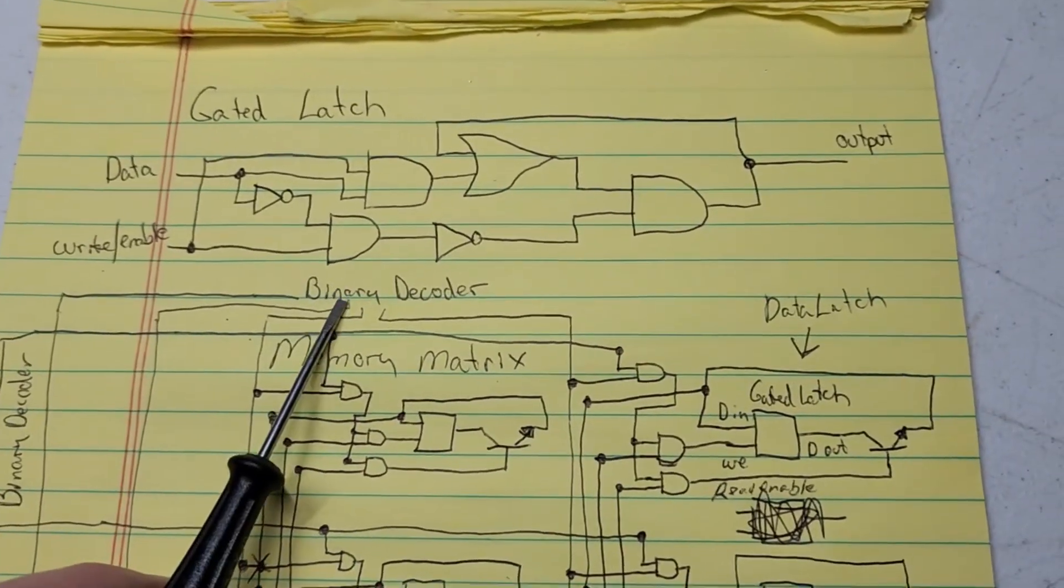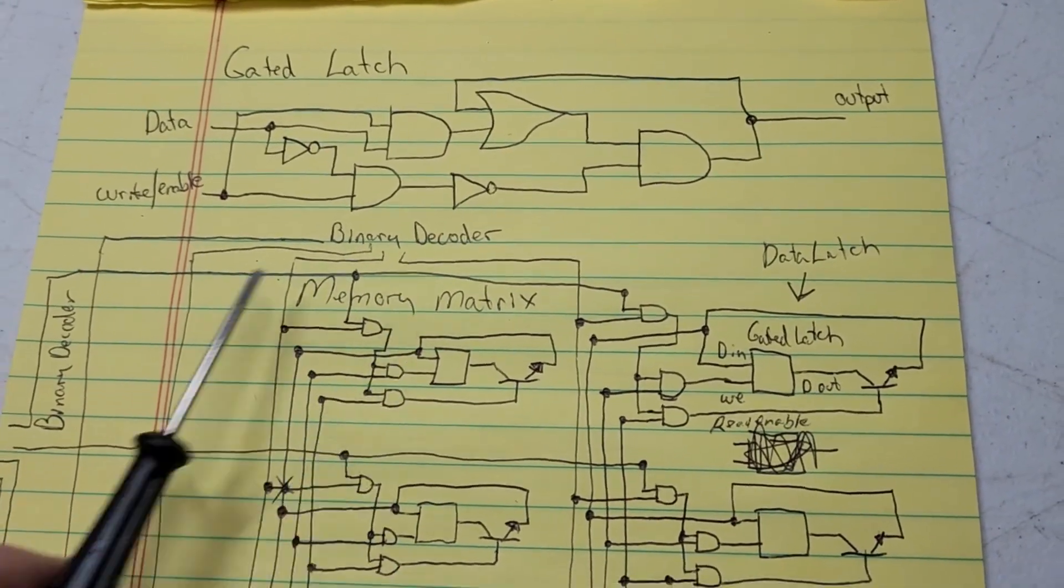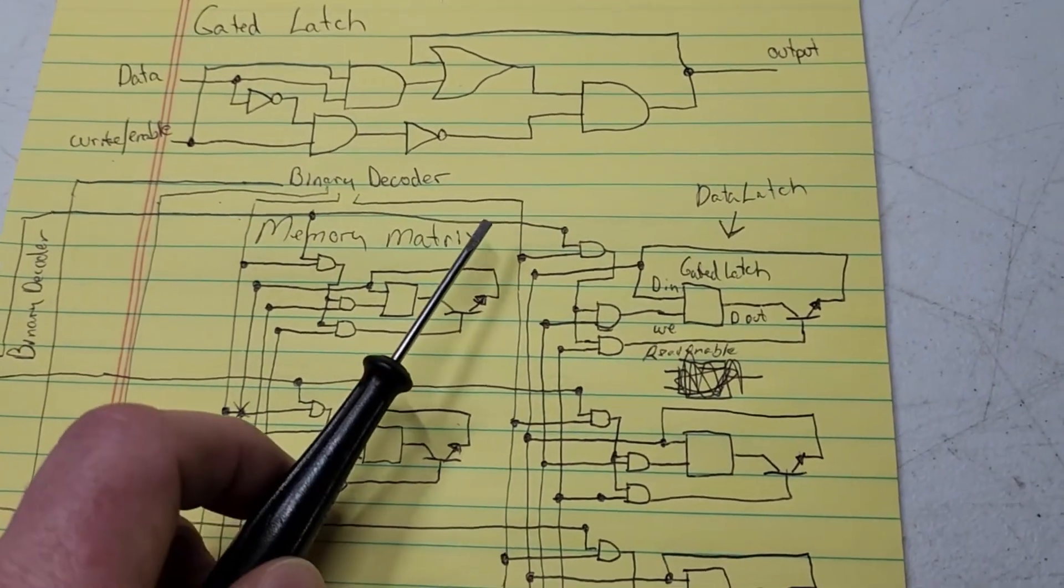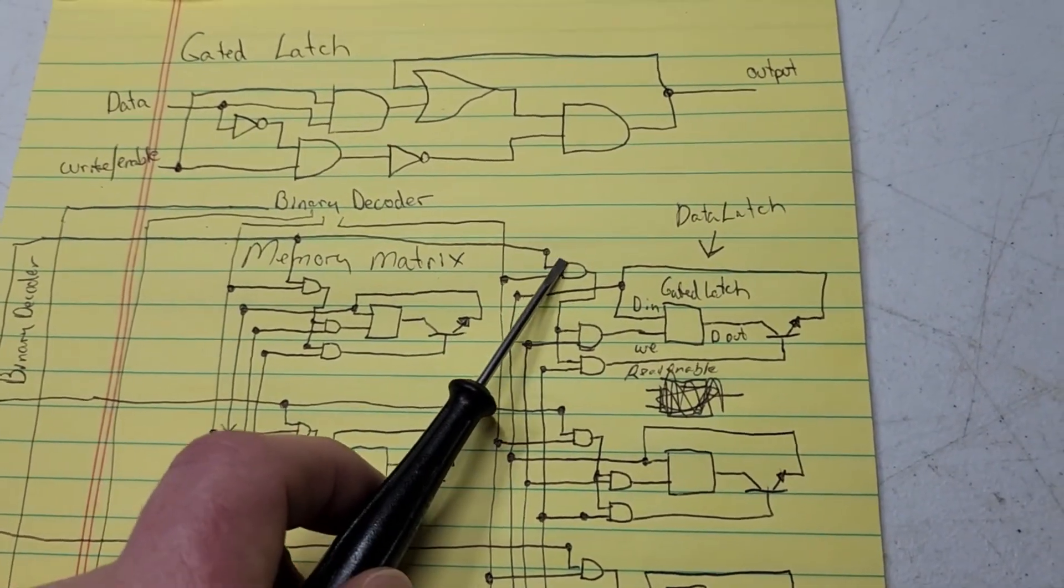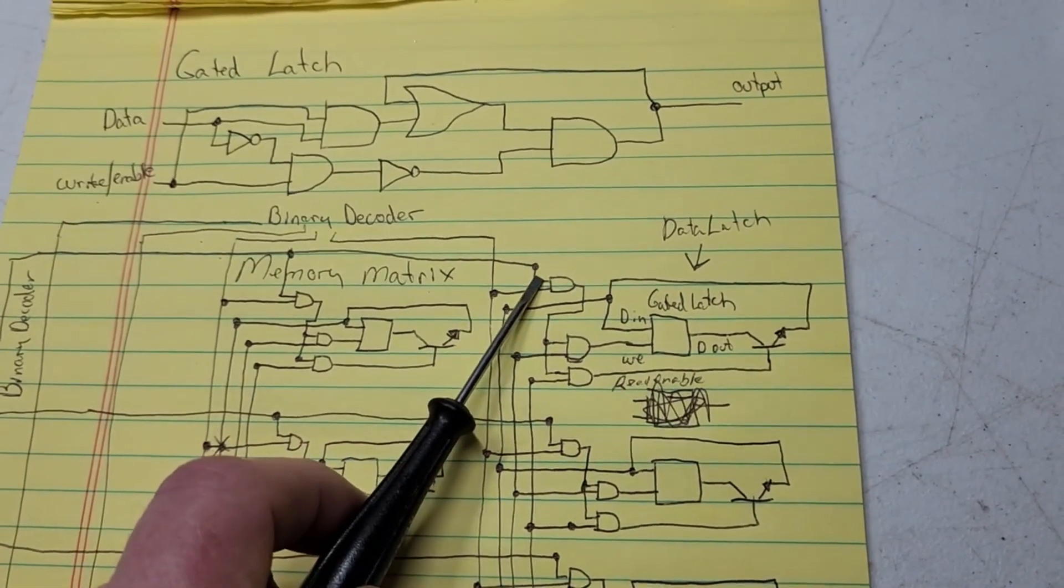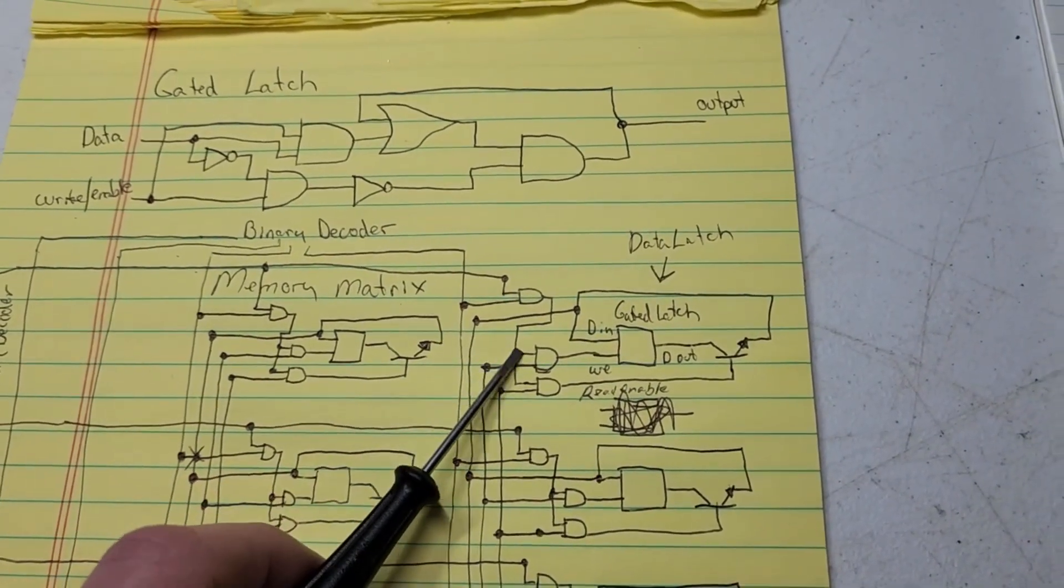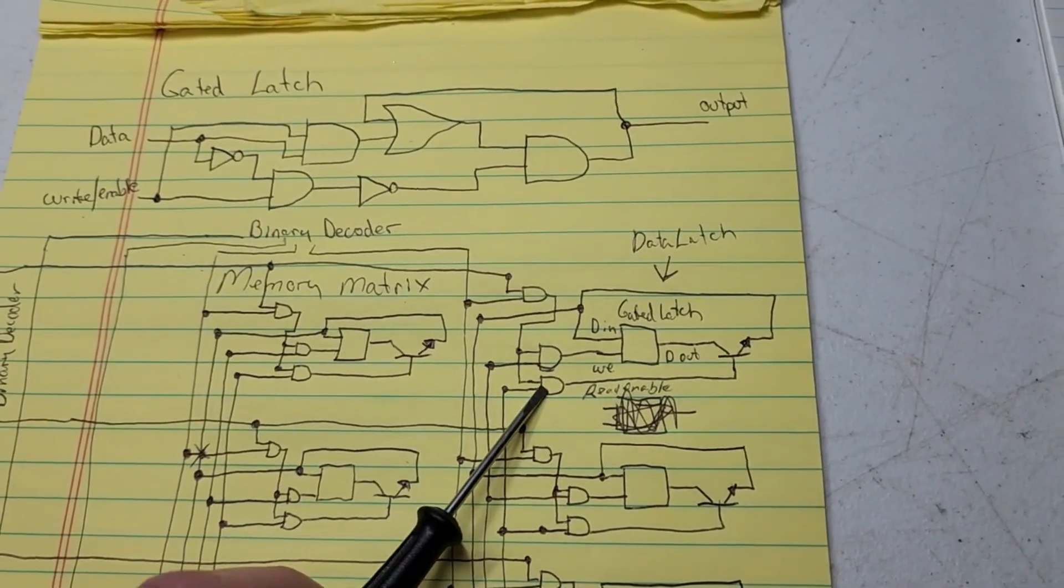Anyhow, so then I'm going to have a binary decoder. I have four bits here and then I'll have a four bit one on the left side, and it makes like a matrix. Right? So if this one's selected and this one is selected, then it enables these two AND gates.